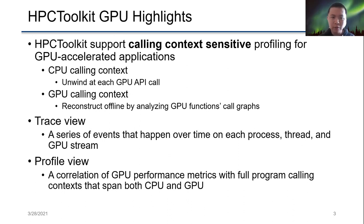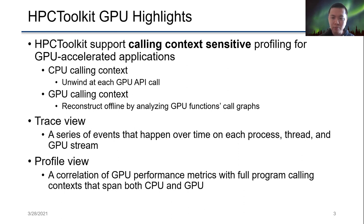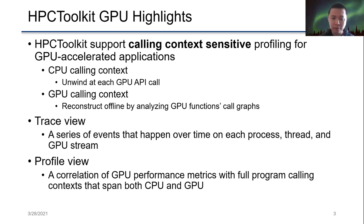HPCToolkit offers two kinds of views. The first is a trace view, where you can see a series of events that happen over time on each process thread and GPU stream. In the HPCToolkit profile view, you can see a correlation of GPU performance metrics with program contexts that span both CPU and GPU.